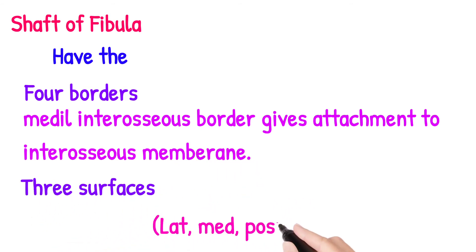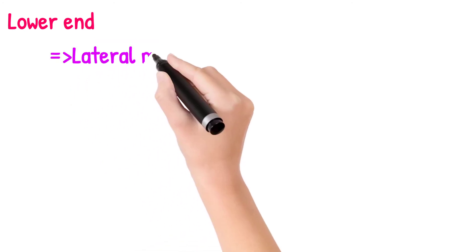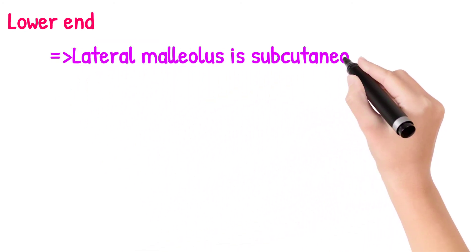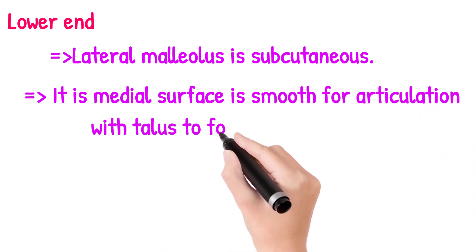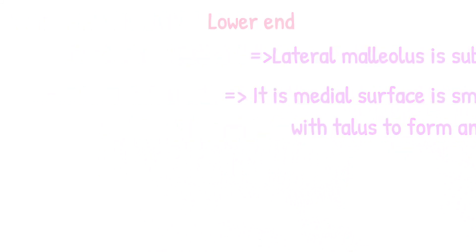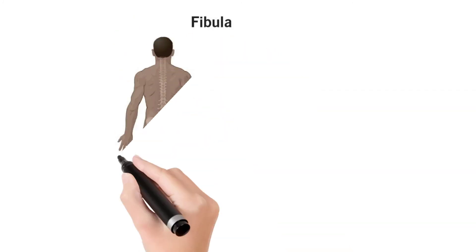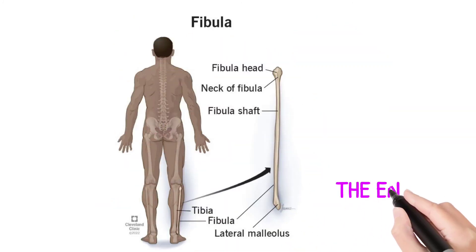Now we come toward the lower end of fibula. The lateral malleolus is subcutaneous. Its medial surface is smooth for articulation with the talus to form the ankle joint. This is the structure of fibula bone.